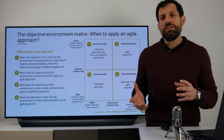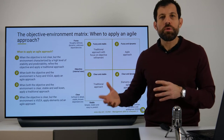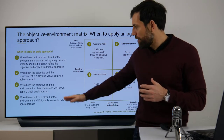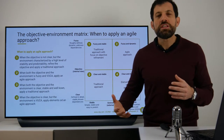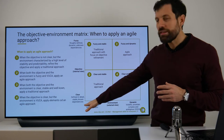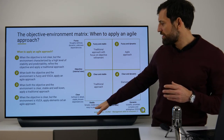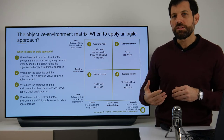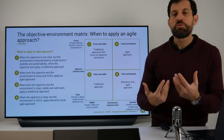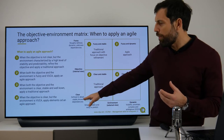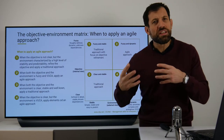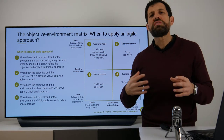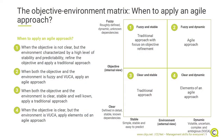Does it always make sense to be Agile? Of course not — it depends. One of the variables that helps you decide whether to be Agile or not is the environment. When you look at the objective-environment matrix, the first dimension to consider is whether the environment is stable, simple, and easy to predict, or whether it is more dynamic — a VUCA environment. The second variable is whether your objective is very well defined in detail or is more fuzzy and not yet fully clear. Depending on those two dimensions, you get four different categories to help you decide when to be Agile or not.